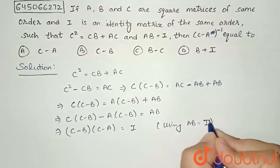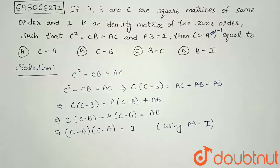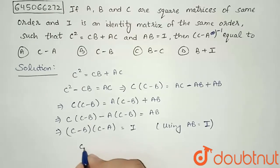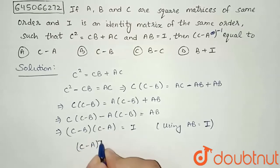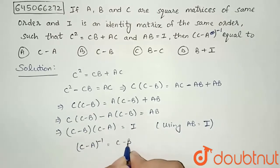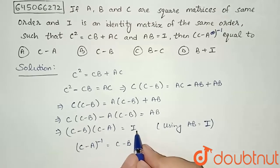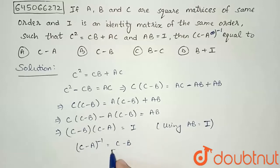I have used here AB = I, which is given to us in the question. Since the product of these two is equal to identity matrix, that means (C - A)⁻¹ will be equal to C - B, because the product of these two equal to identity matrix means they are inverse of each other.